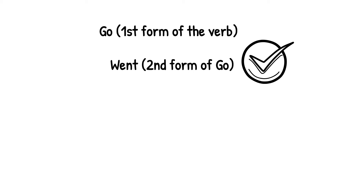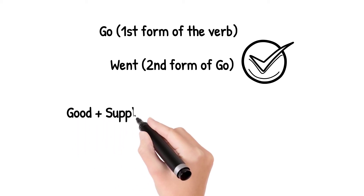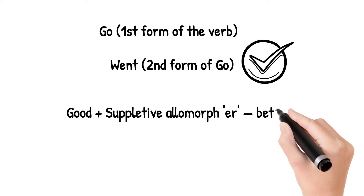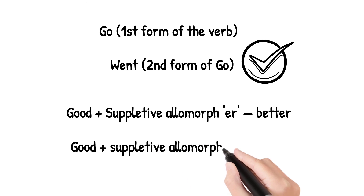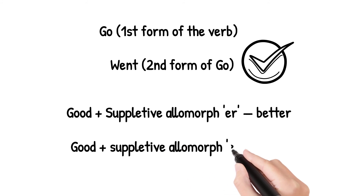These words cannot take -ed at the end for making the second or third form. So 'go' is the first form and its second form is 'went' through suppletion. Similarly, 'good' is the positive degree; when we add a suppletive allomorph to make the comparative degree it becomes 'better', not 'gooder'. And when we make the superlative degree of 'good' it will be 'best', not 'goodest'. These are exceptions where words change to a completely different form.